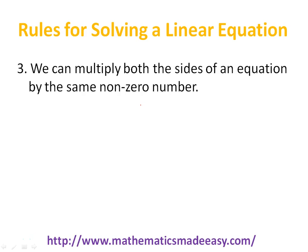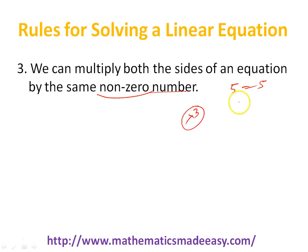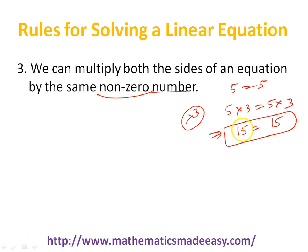Moving to the next rule: we can multiply both sides of an equation by the same non-zero number. Remember, that number should not be 0. We can multiply the same number on the left hand side and the right hand side, but that number should not be 0. For example, suppose I have the equation 5 equal to 5. If I multiply both sides by 3: 5 times 3 on the left and 5 times 3 on the right gives 15 equal to 15. This is still valid — left hand side equals right hand side. So we can multiply by any non-zero number on both sides of the equation.